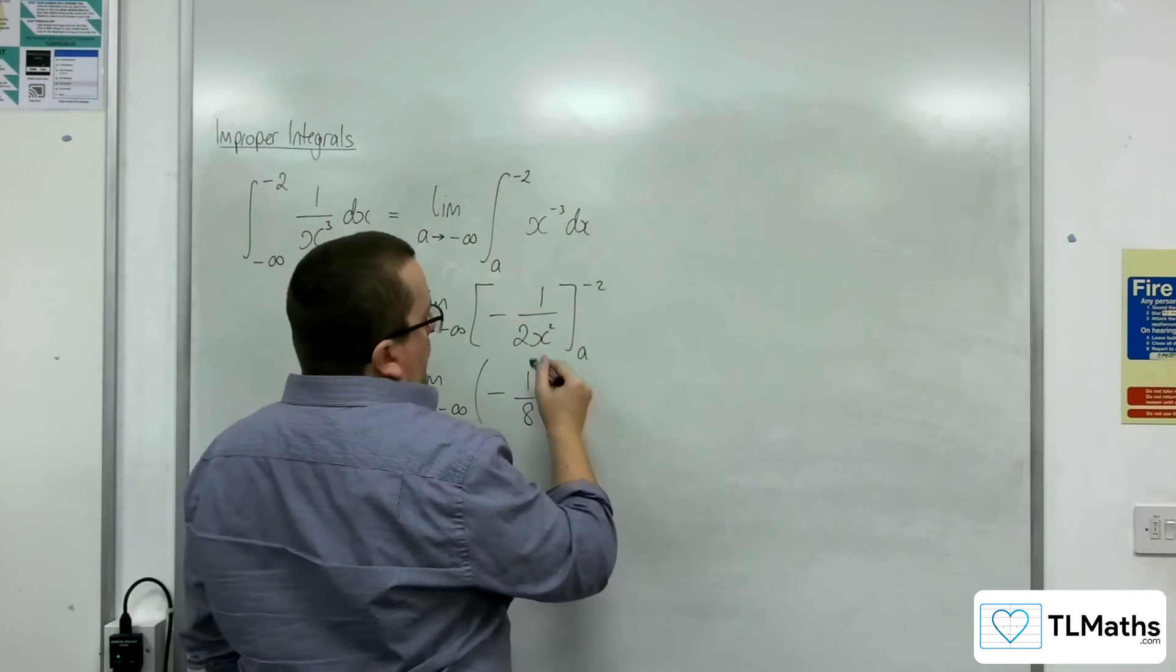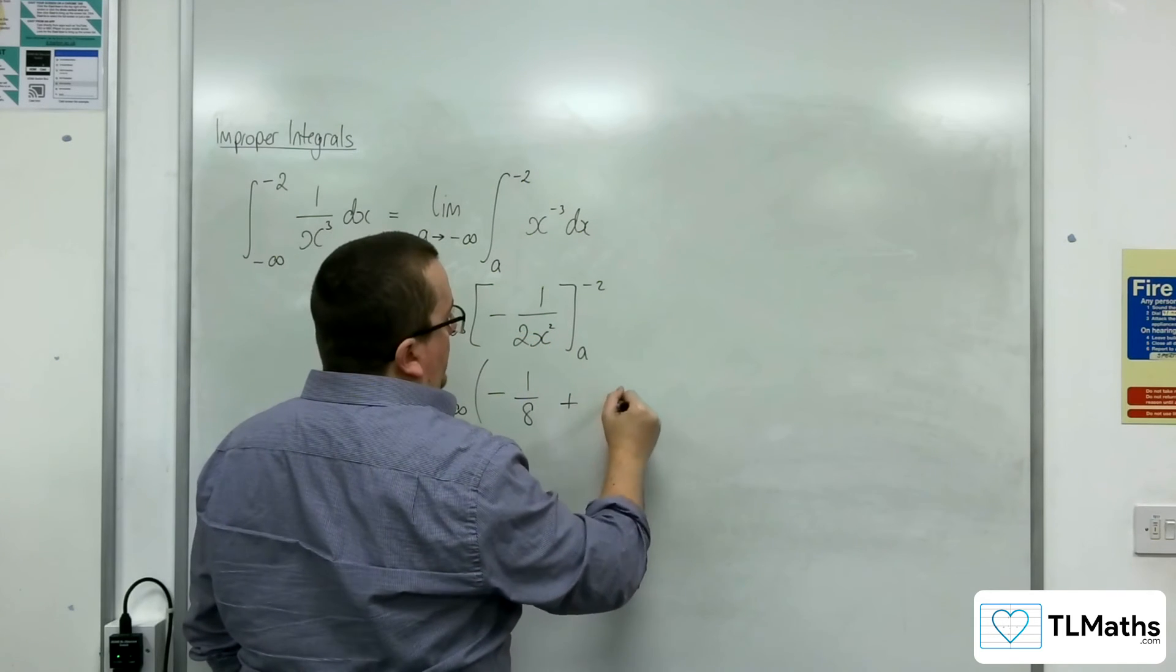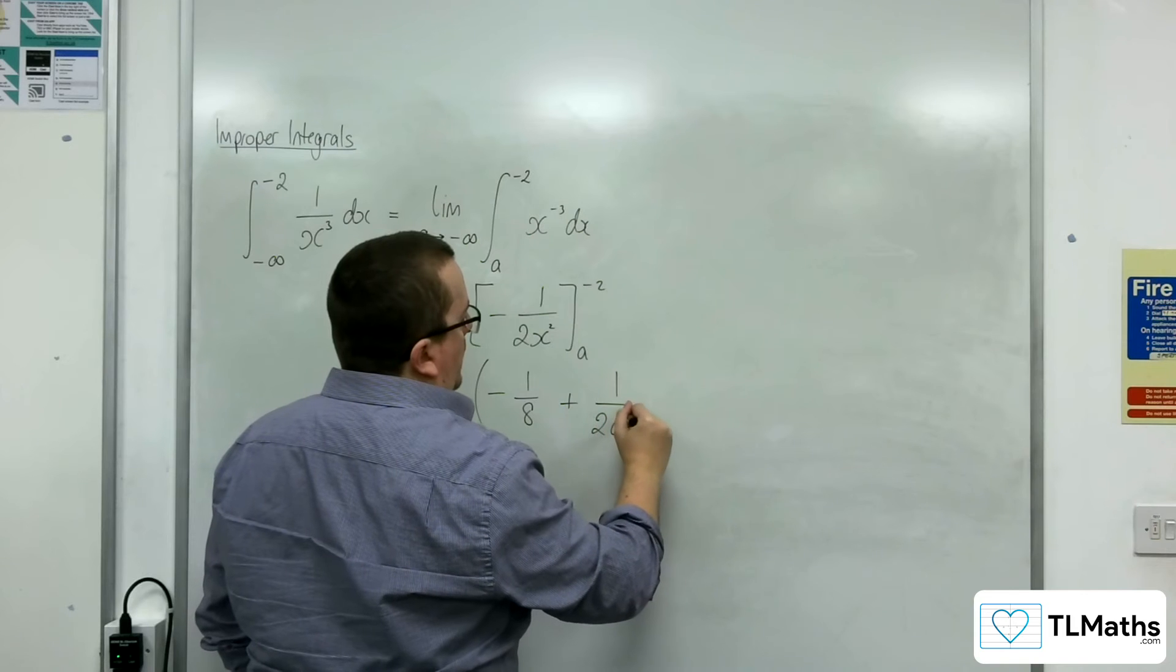Substituting in the a, we're taking away as well, so plus 1 over 2a squared.